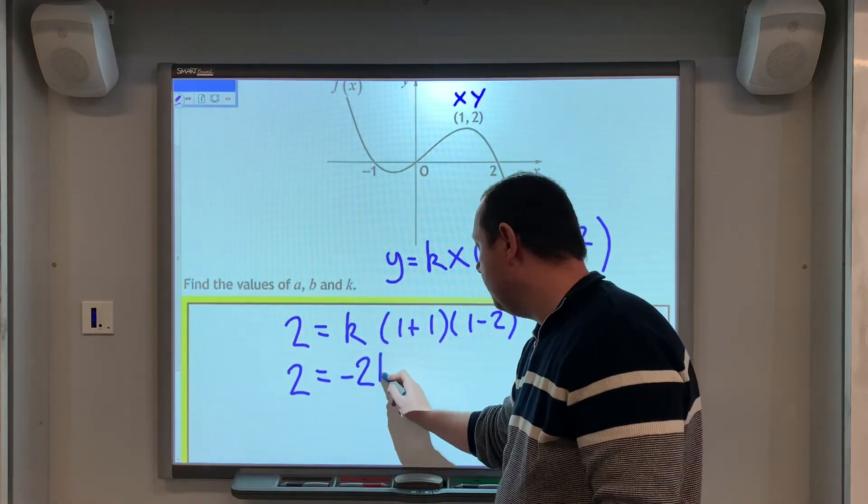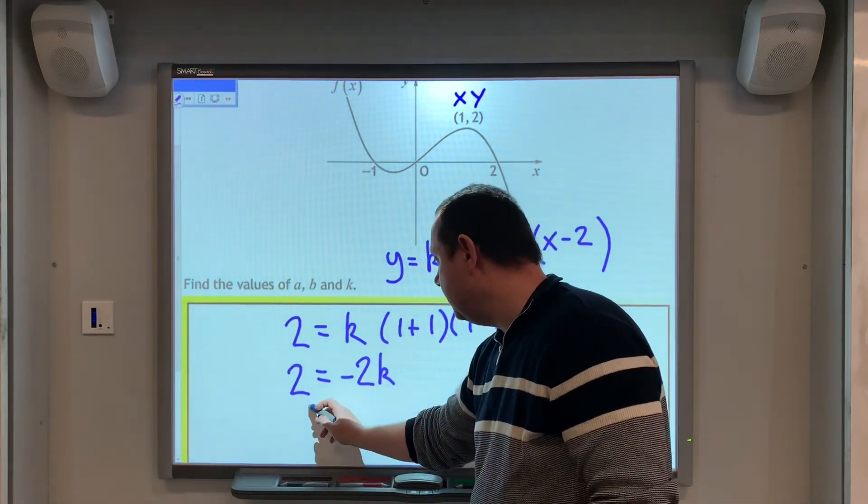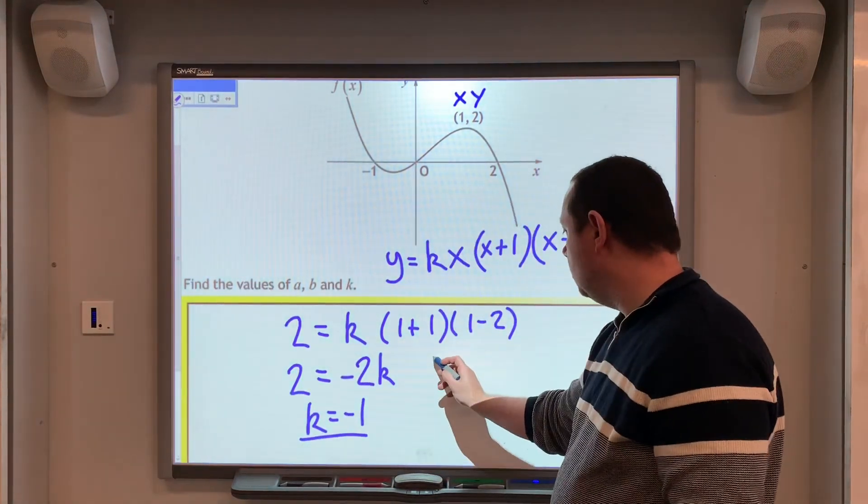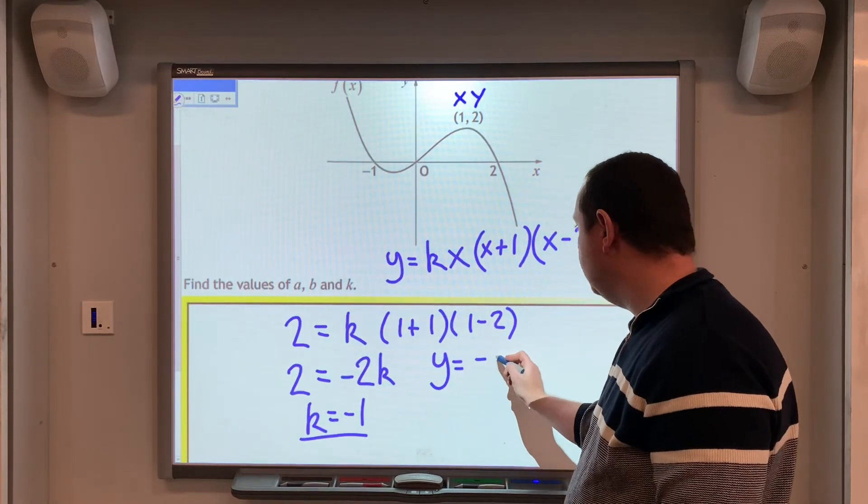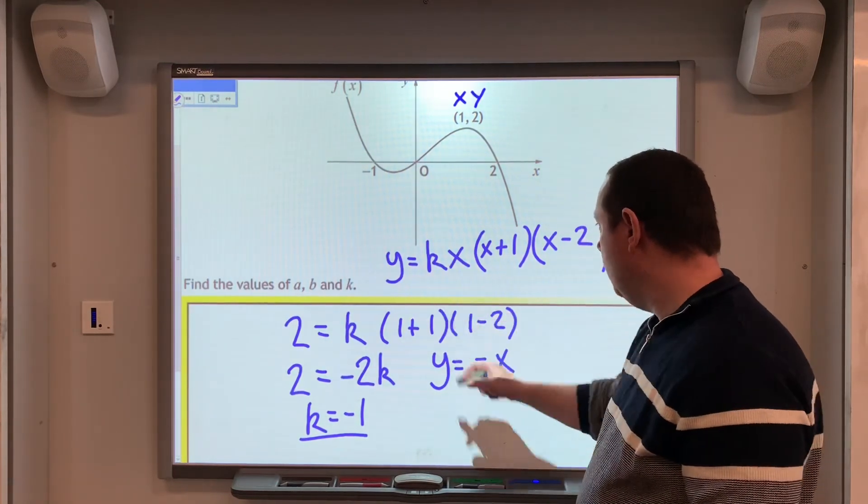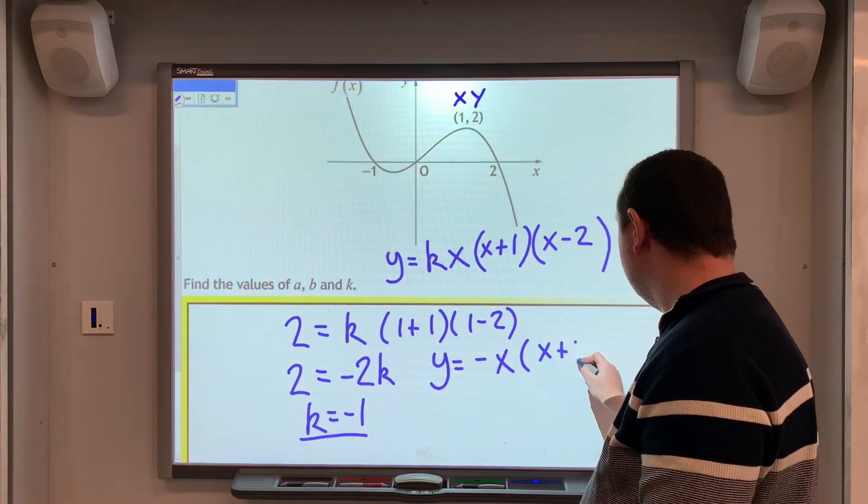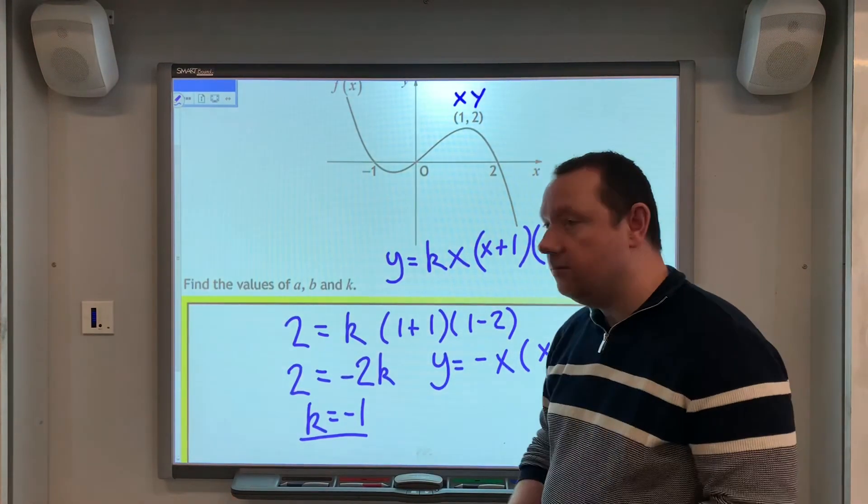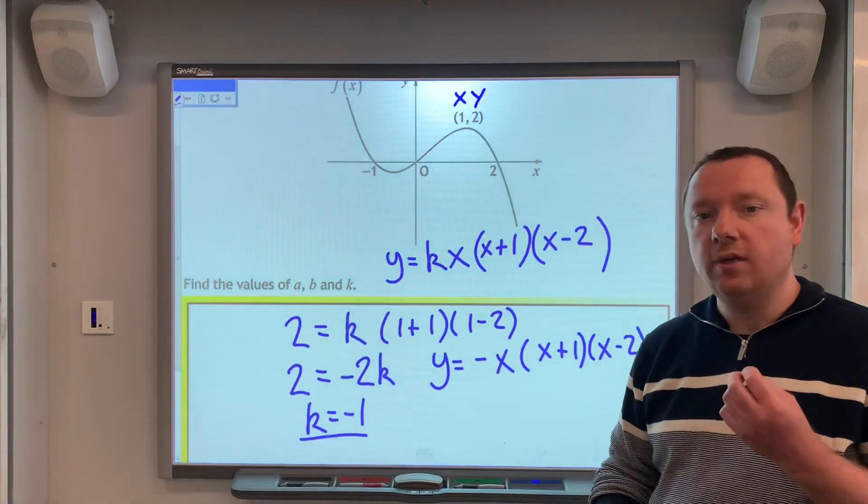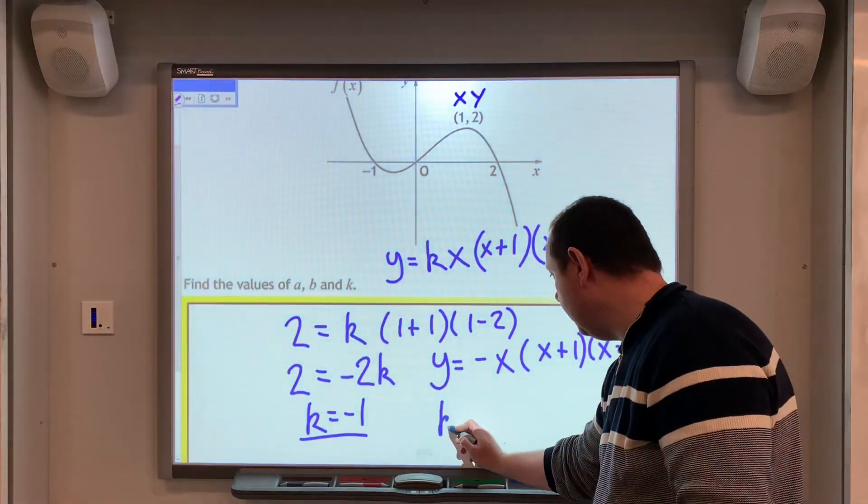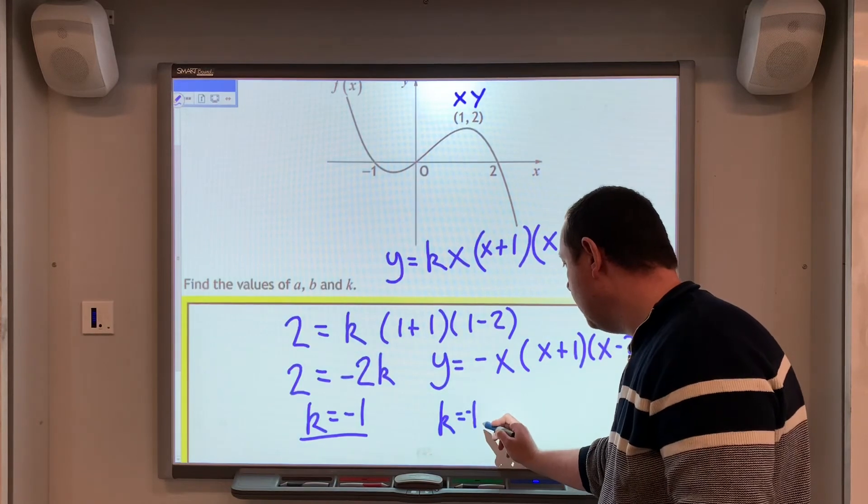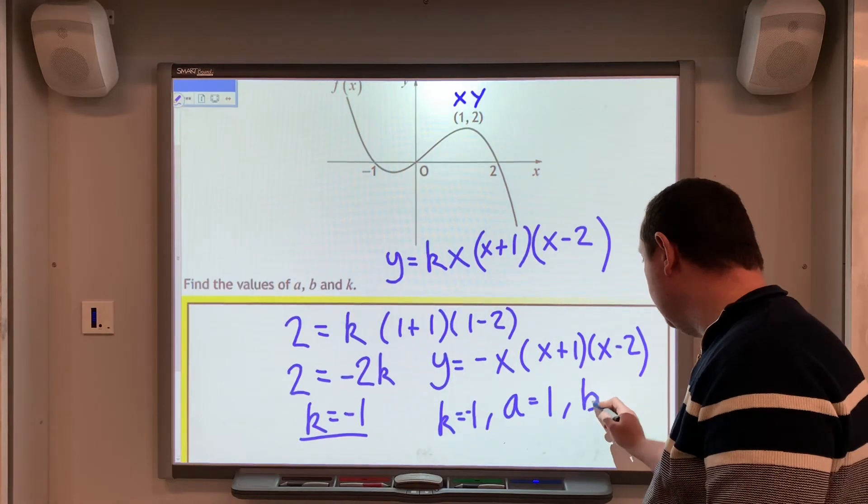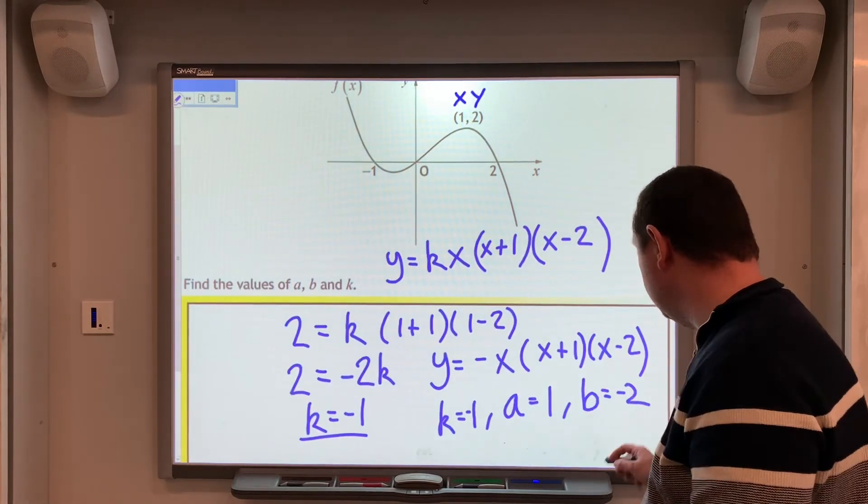So, in this case, k equals minus 1, so our equation becomes y equals minus x, minus 1, x add 1, x minus 2. And now, to actually answer the question, it asks us the values of k, a, and b. So, k is minus 1 again, a is 1, the first number, but b is negative 2, the second number.